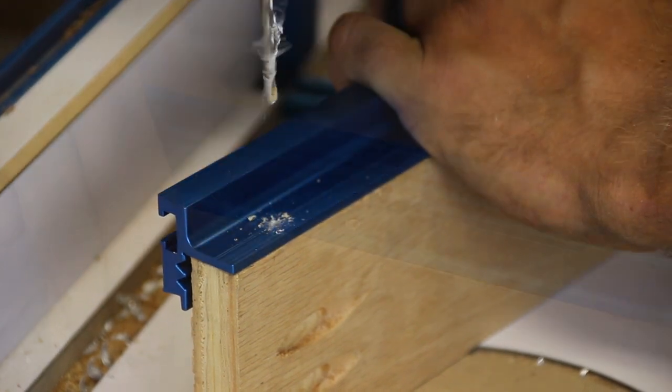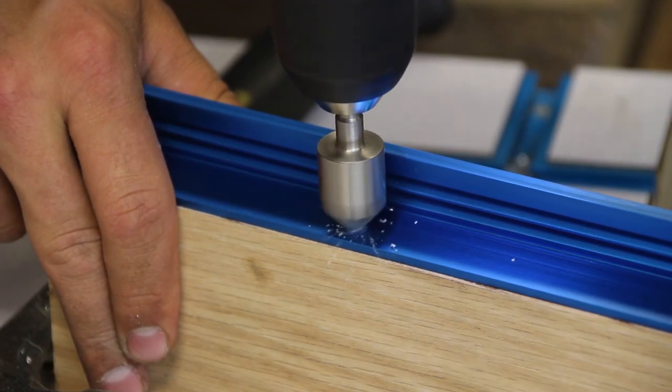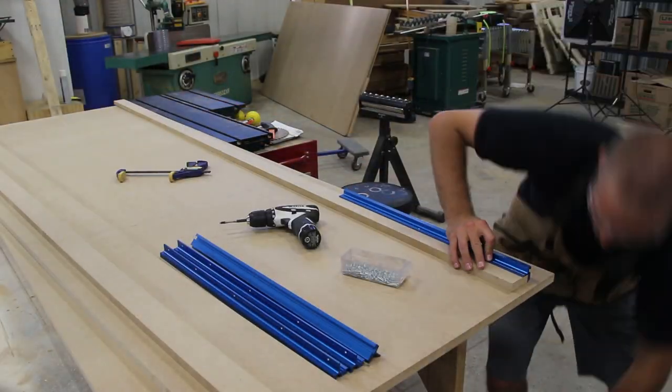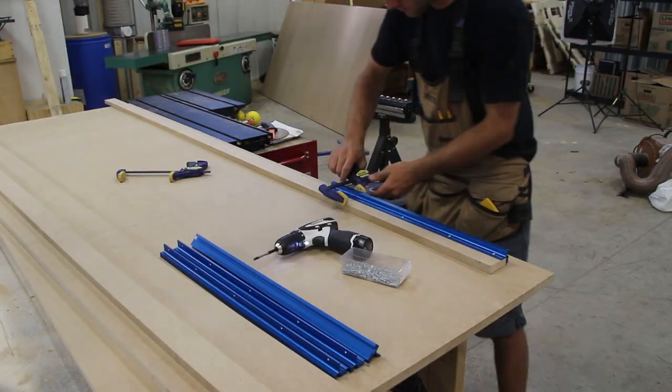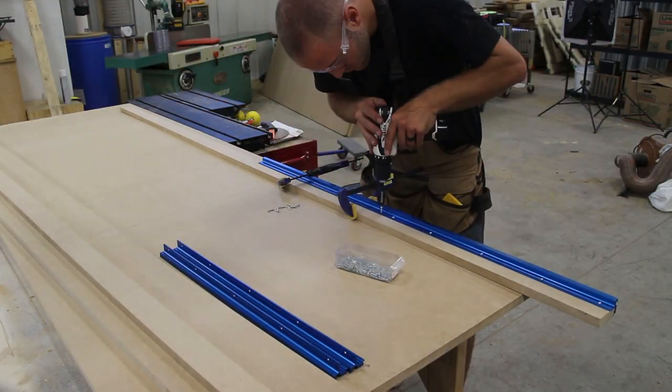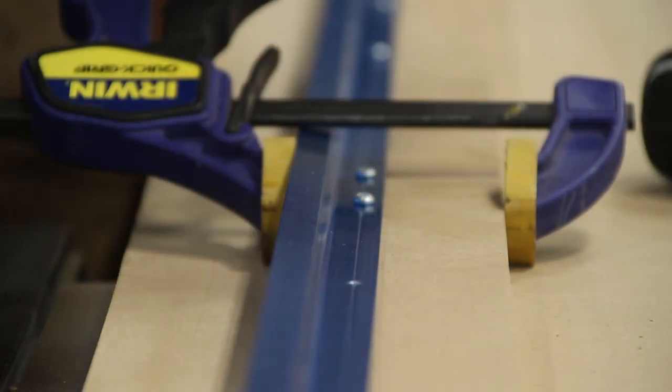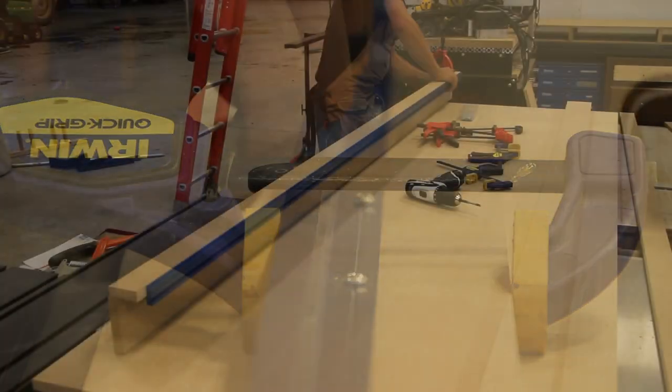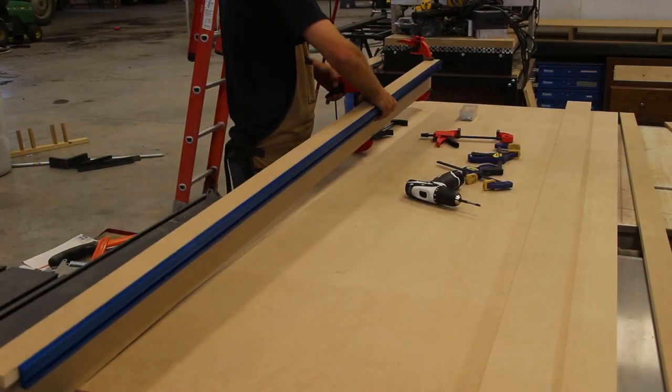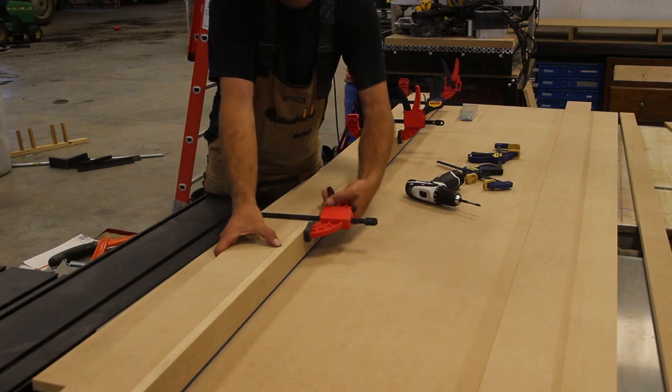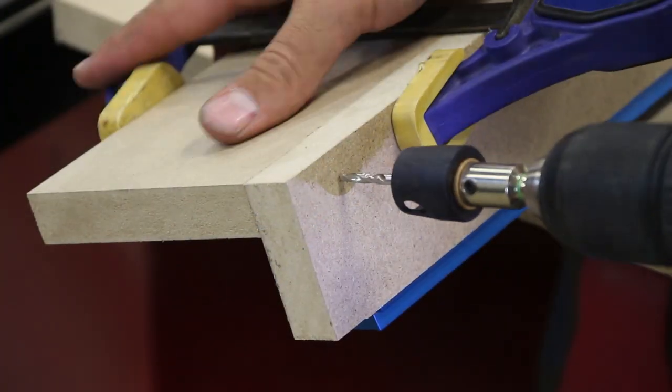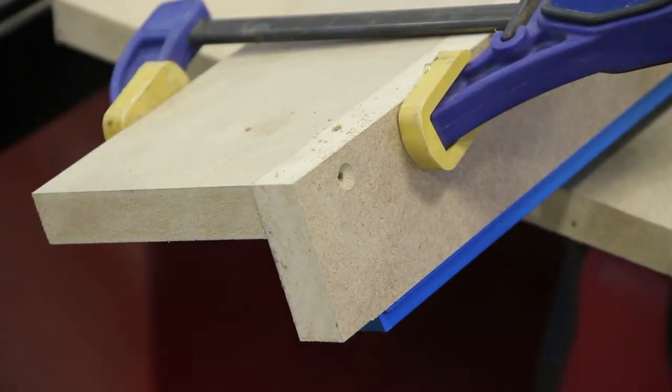I then use a countersink and a hand drill to remove the burr. I install the aluminum sections to the vertical section of the fence. Make sure to use a small clamp to keep the aluminum tight against the MDF. With the aluminum sections installed we can clamp the horizontal section and the vertical section together. I drill a pilot hole with the countersink and then drive a screw.